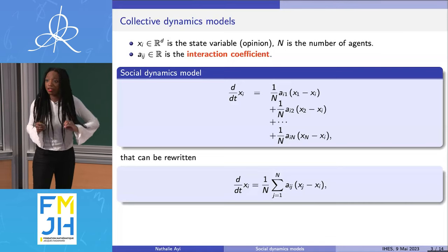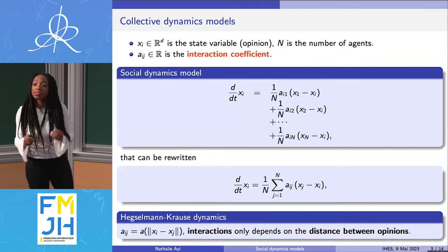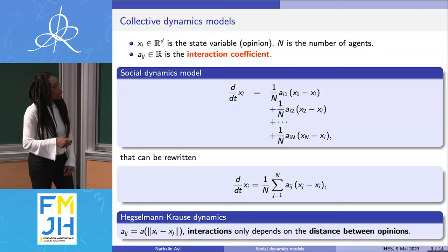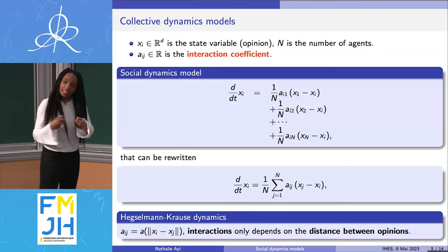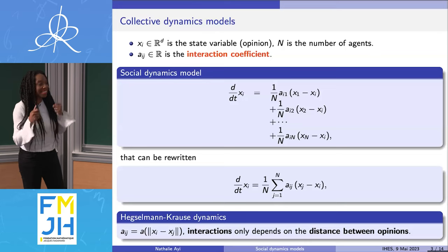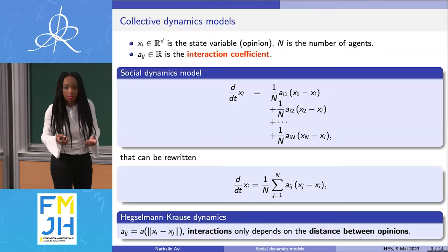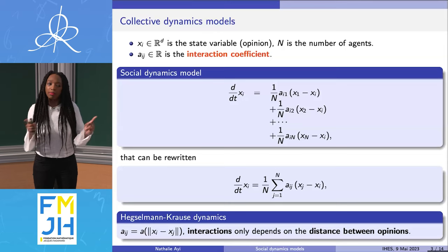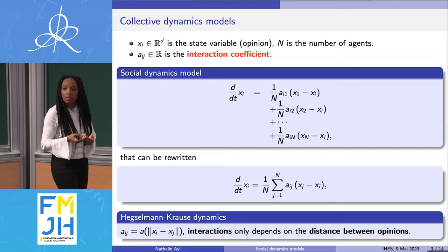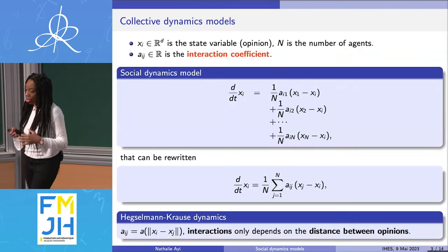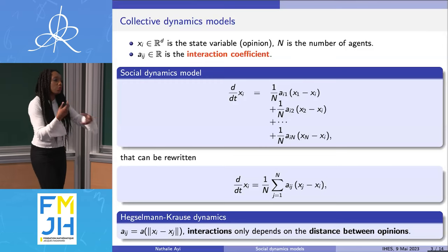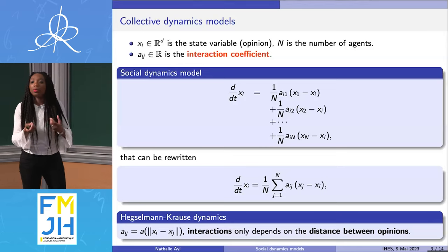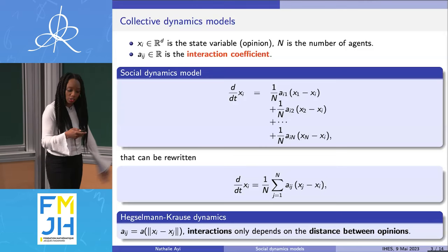Let me show you a particular case: what we call the Hegselmann-Krause dynamics. It's the case where the interaction coefficient has a particular form, meaning that your interactions only depend on the distance between opinions. For instance, if two agents have opinions that are too far away, they do not interact — discussing won't change their opinion. This makes sense in real life: if you discuss with a person whose opinions are very far from yours and you share no values, it's less likely they will make you change your mind.